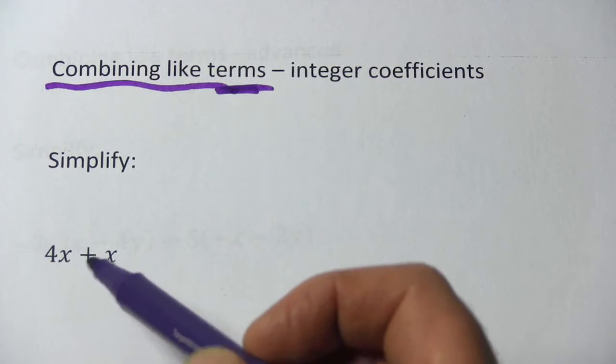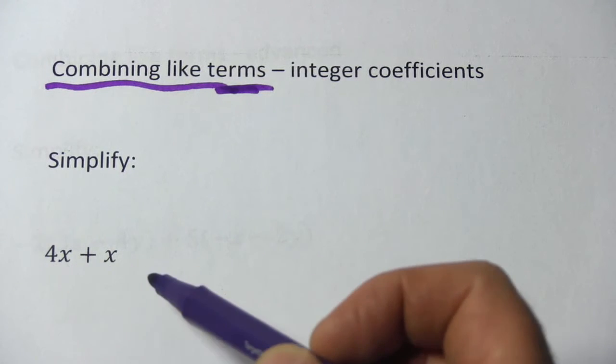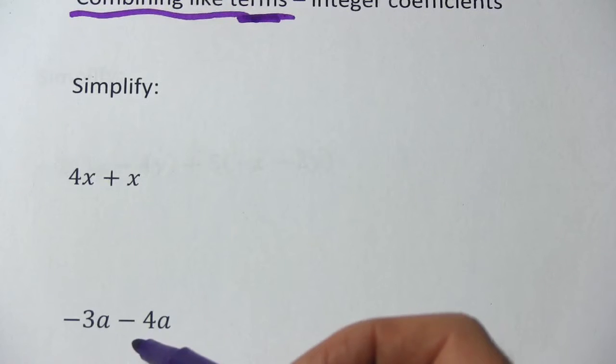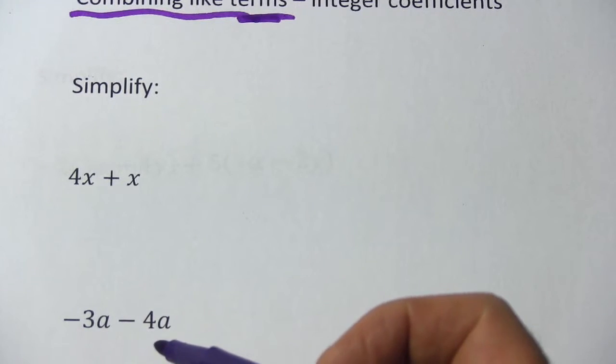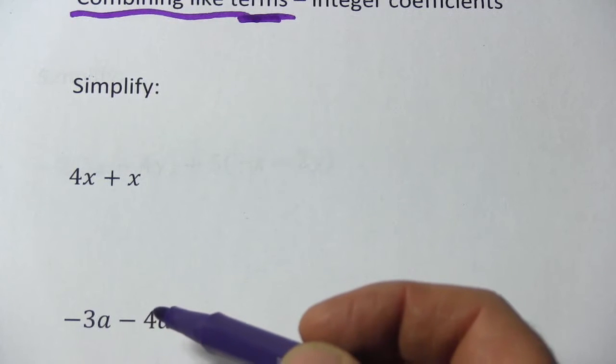So here we have 4x plus x. 4x is a term, x is a term. Down here we've got negative 3a minus 4a. Those are two separate terms. Usually terms are attached to each other with a plus or a minus.